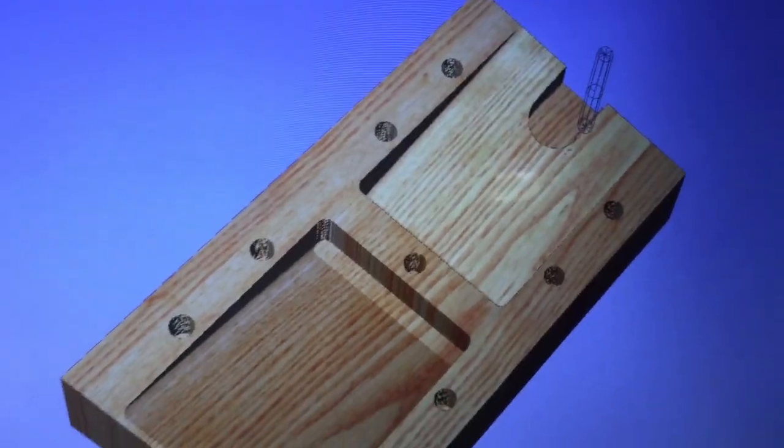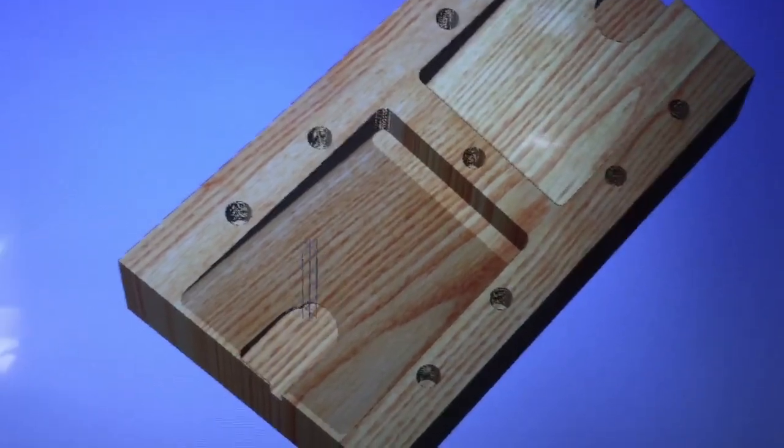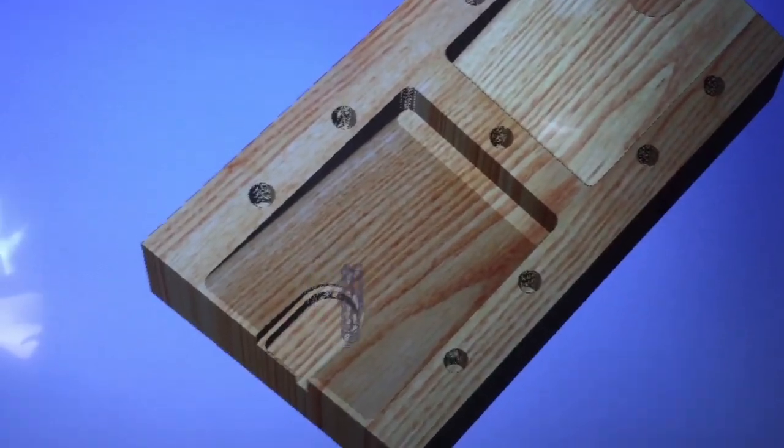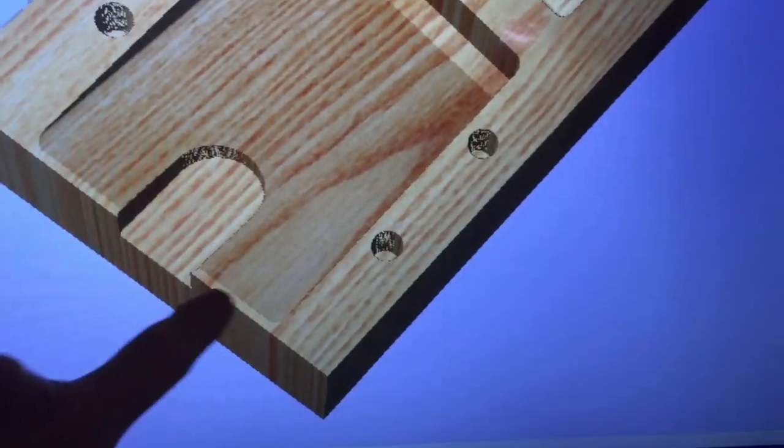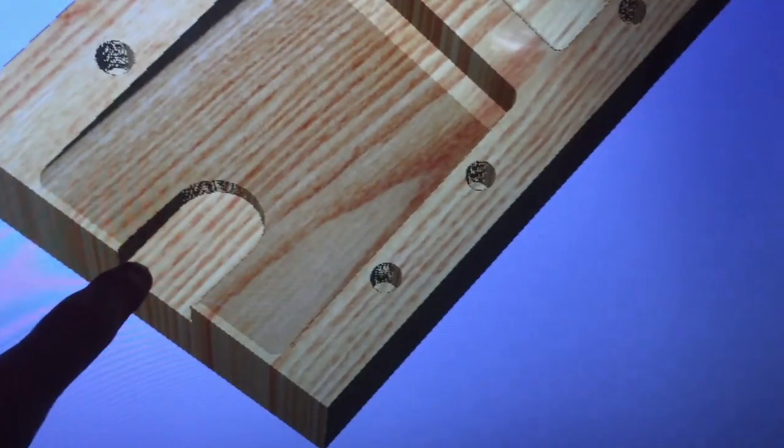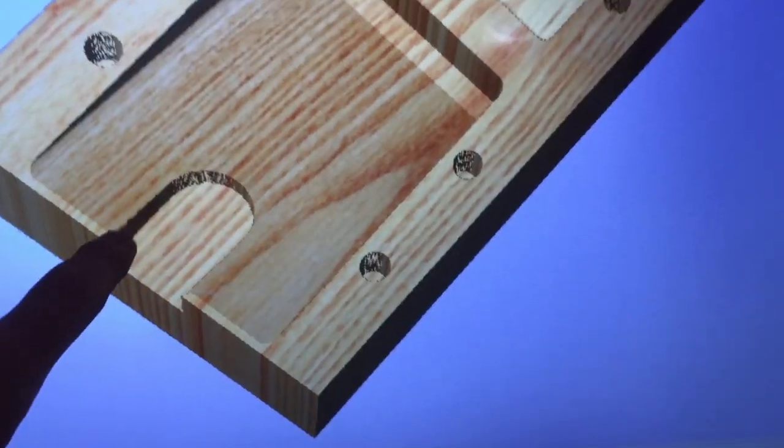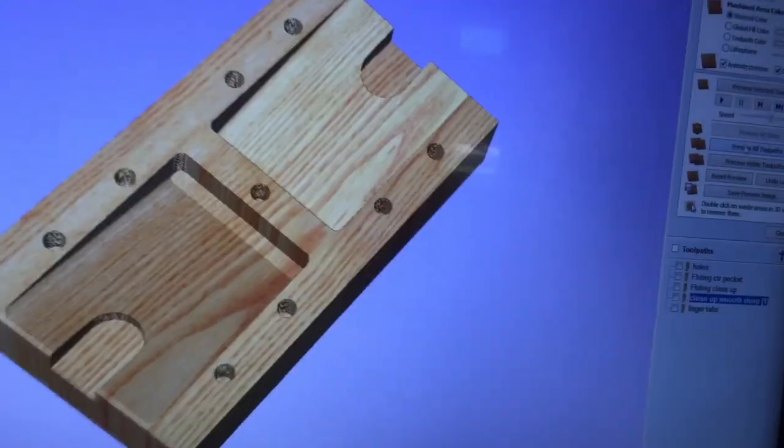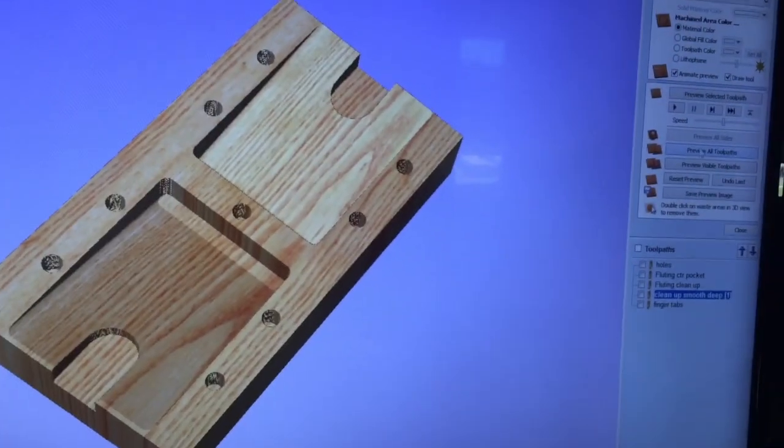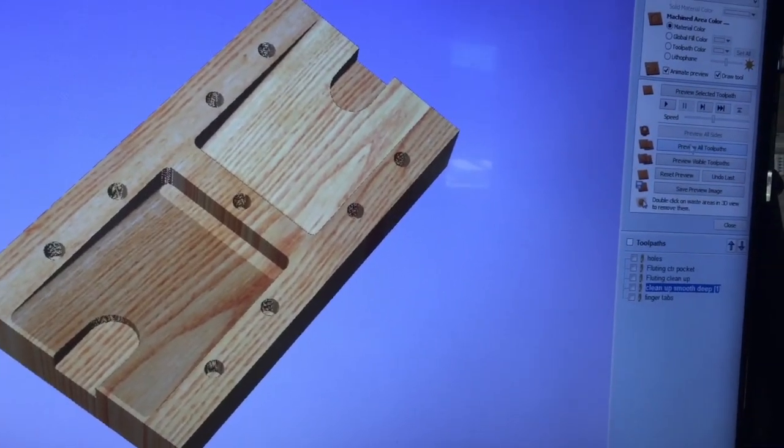So you just offset it by a hundredth of an inch from the last path so you clean it up there. And then it does the end pockets last. That's just the order I chose. The reason I didn't have to do the pockets first is because I'm going to cut this material away, so that gives it less to cut the second time when it comes in and cuts this.